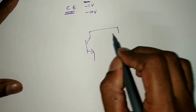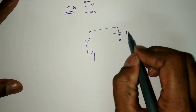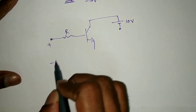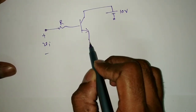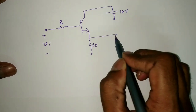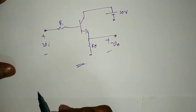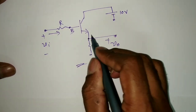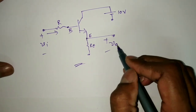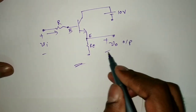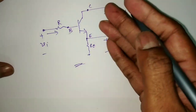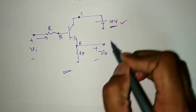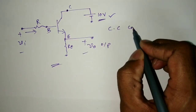Another example: the collector is fixed at 10V, input is applied to the base through a resistance, and output is taken at the emitter through a resistance RE. Input is at the base, output is at the emitter, and the collector voltage is fixed at 10V — so collector is the common (reference) terminal. This is a common collector configuration.